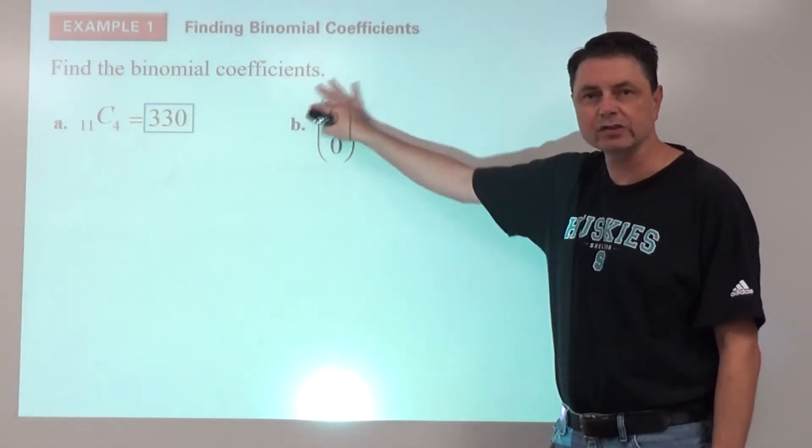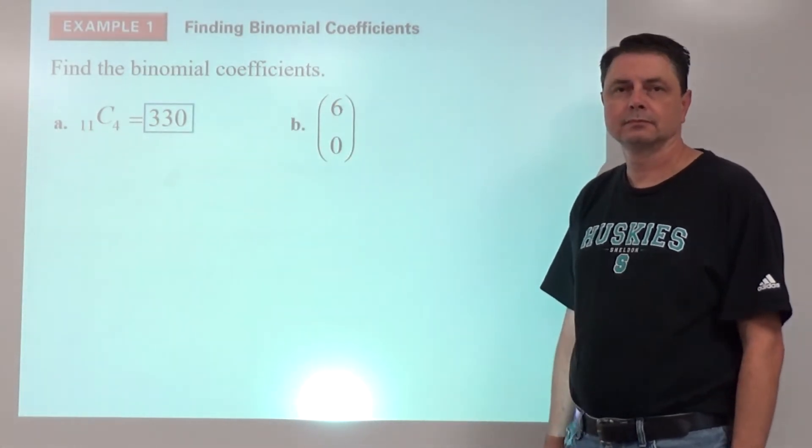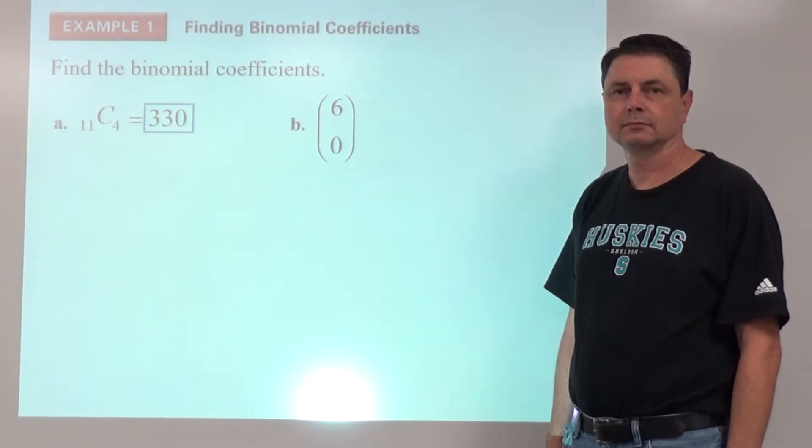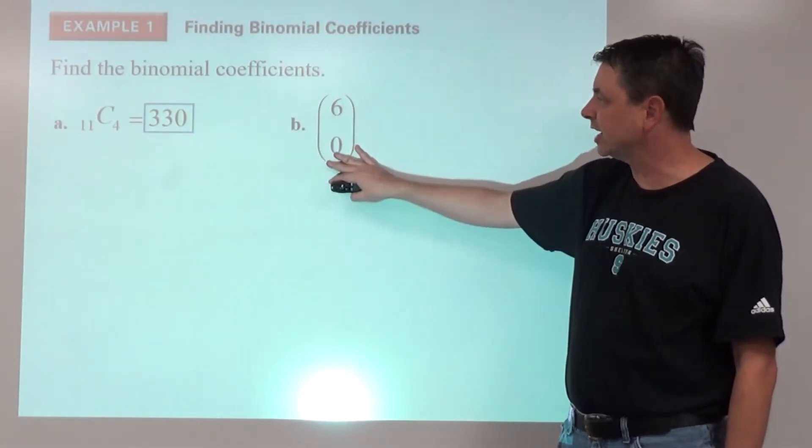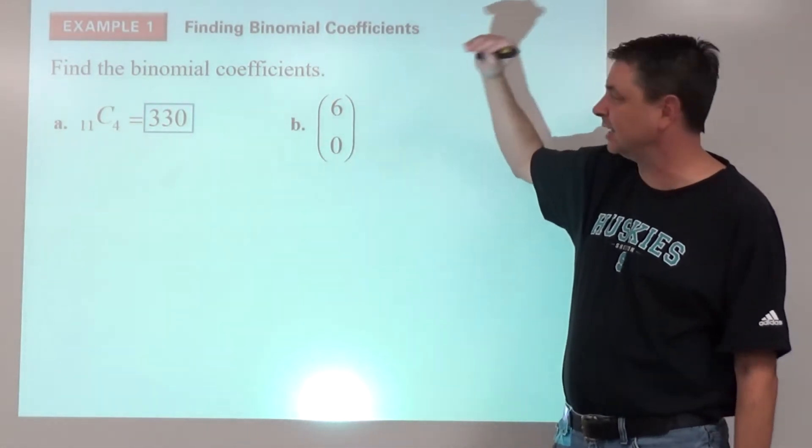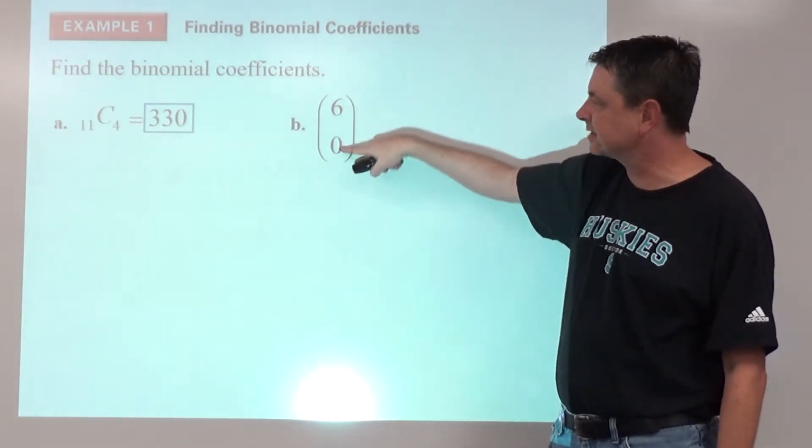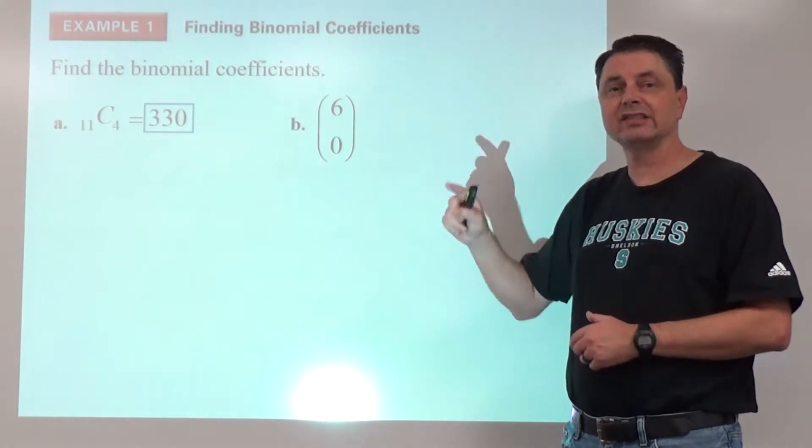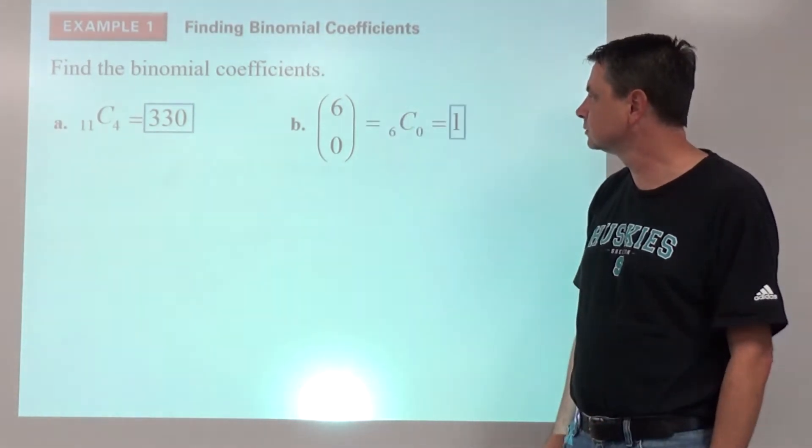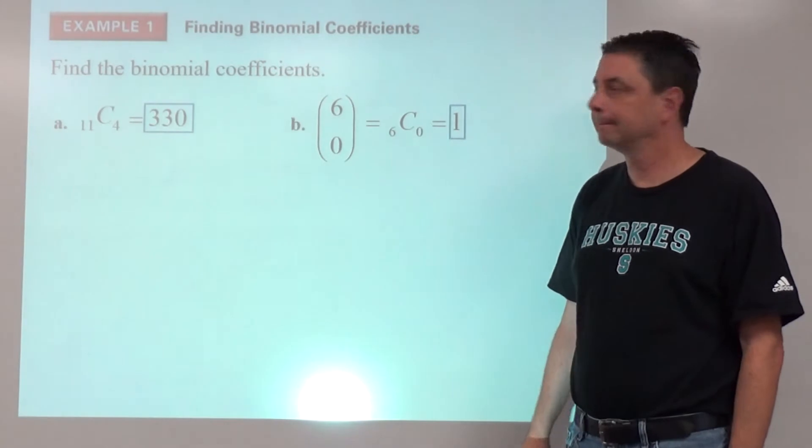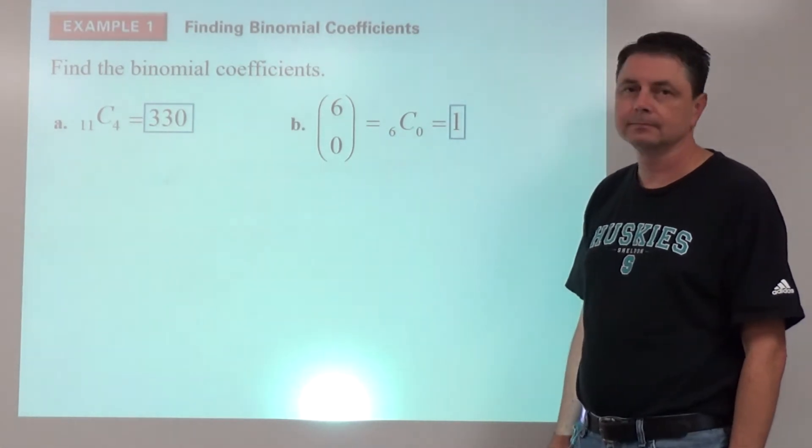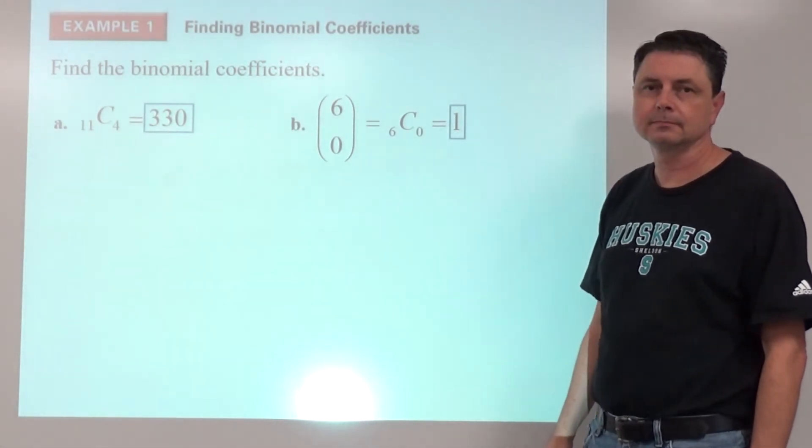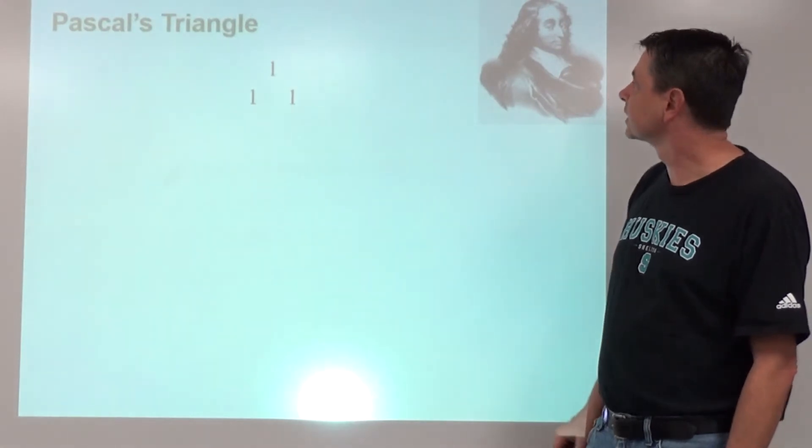Alright. Go ahead and try this one. So remember the notation here. This just means the same thing as six C0. So we're going to type it in like that. Six, the NCR button, zero. And you get one.